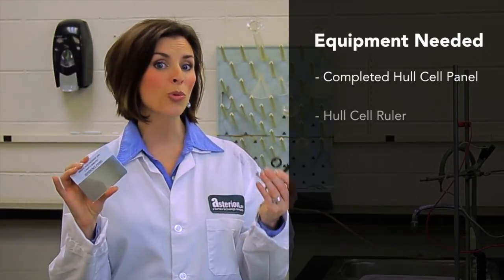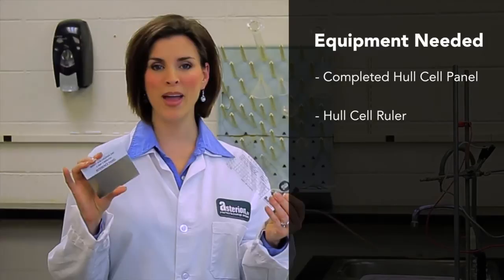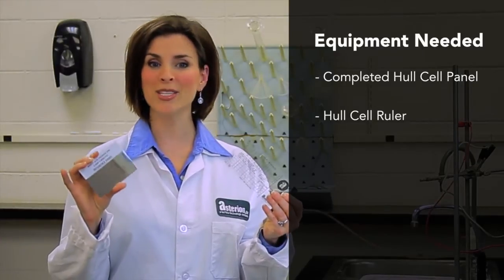Here's the equipment needed to interpret a hull cell panel. After the hull cell panel is plated in the hull cell, the completed hull cell panel and a hull cell ruler are required to analyze the hull cell panel and, correspondingly, the test plating solution.